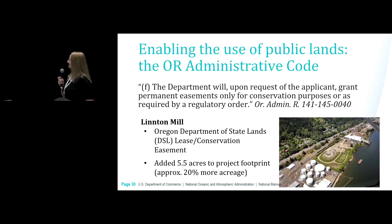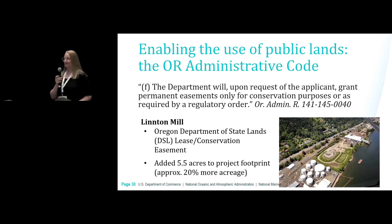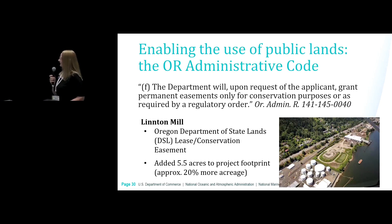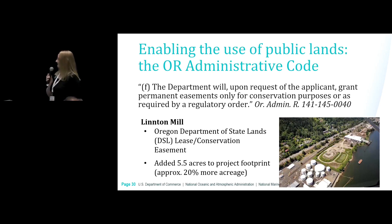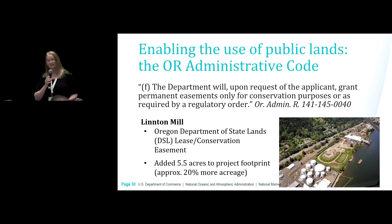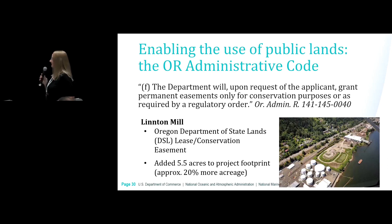Another example of enabling the use of public lands is Oregon's administrative code, which very purposefully grants permanent easements for conservation purposes on Oregon state lands. The restoration site at Linton Mill, just north of Portland, was implemented using that regulation. They were already planning on doing restoration on the mill site, but as a result of Oregon's code, they were able to expand the restoration site into the river and have a permanent easement for that part of the river.